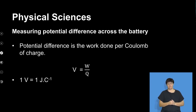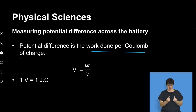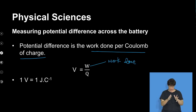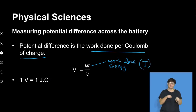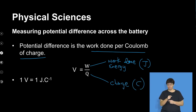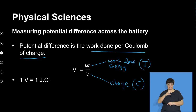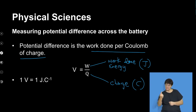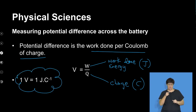What is potential difference as a physical quantity? It is the work done per coulomb of charge. W is work done, measured in joules, while Q stands for charge measured in coulombs. Work is energy and energy is work. So by definition, potential difference is the work done per coulomb of charge. In other words, when we have one volt of potential difference, it means there is one joule of work done for every coulomb of charge — giving us the equation: one volt equals one joule per coulomb.